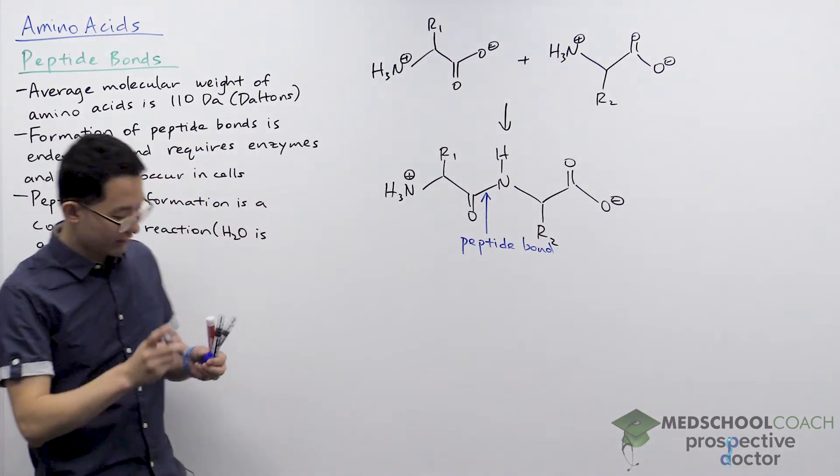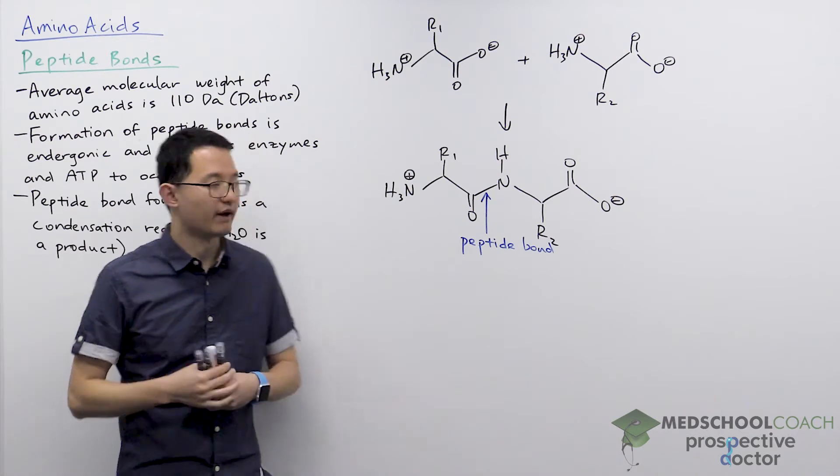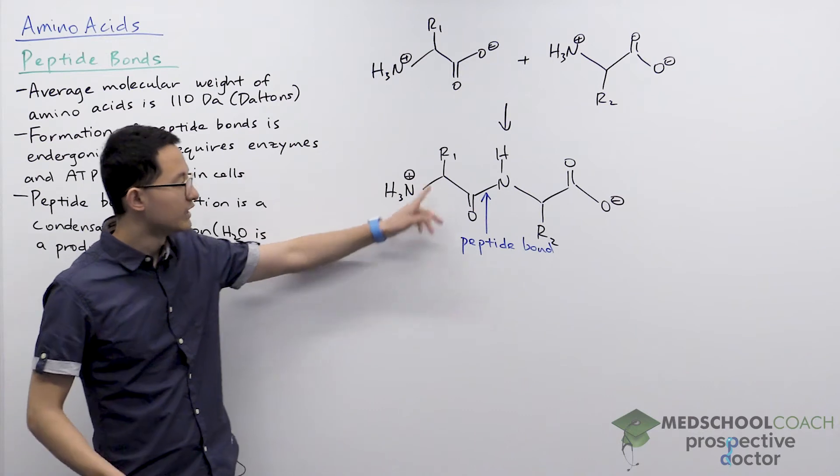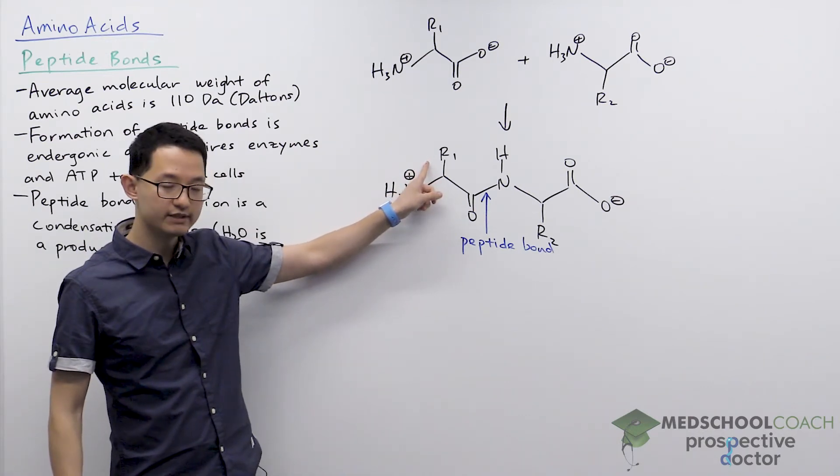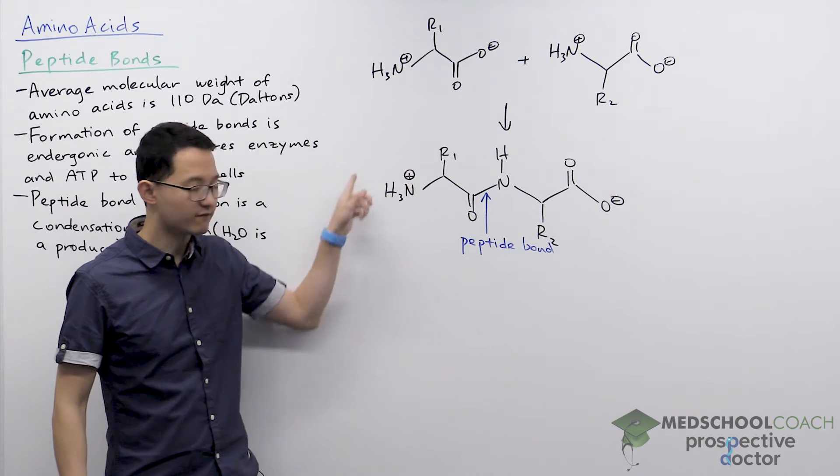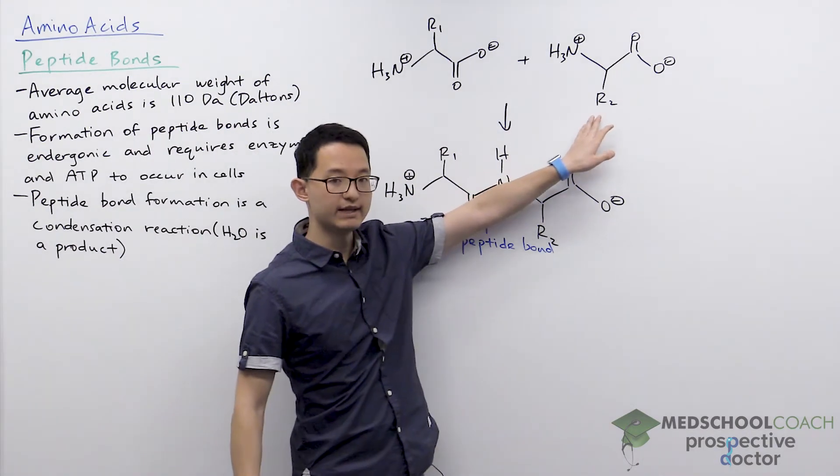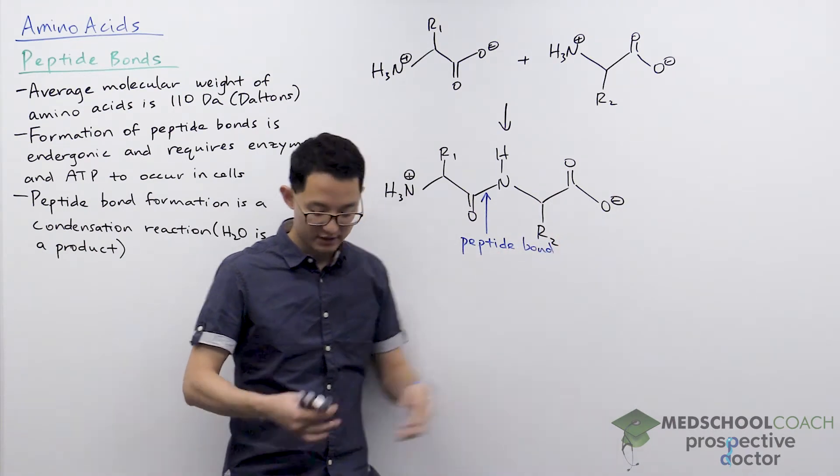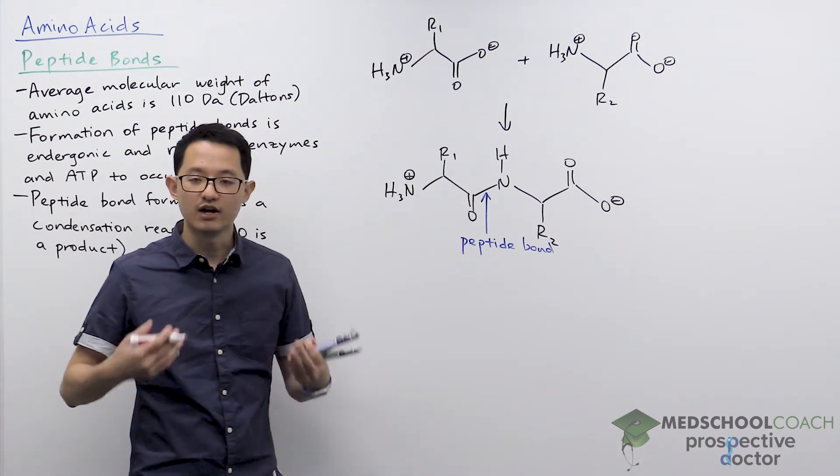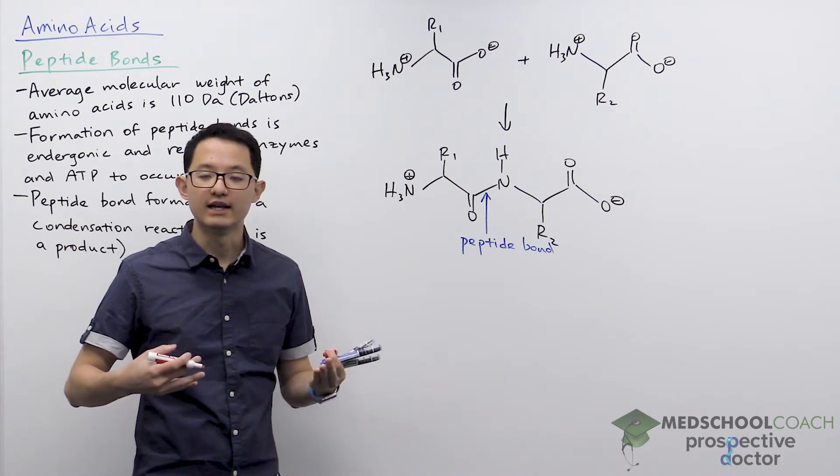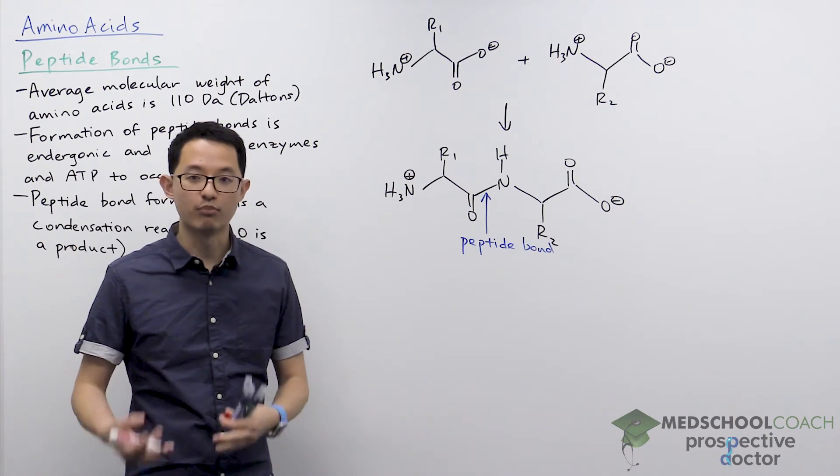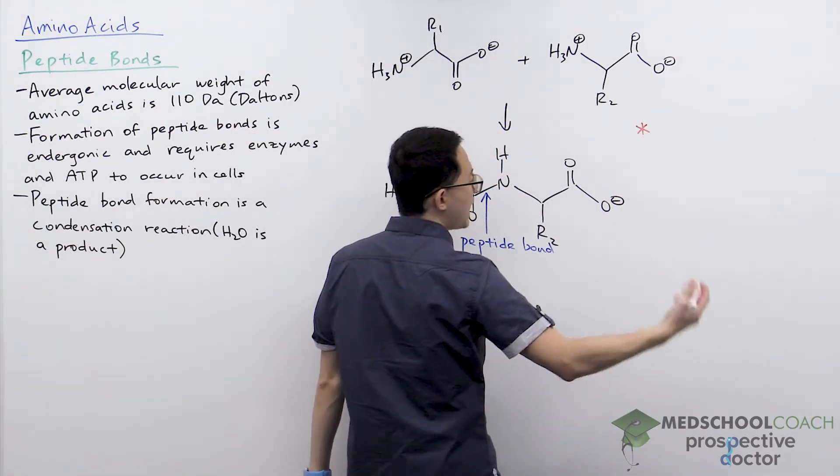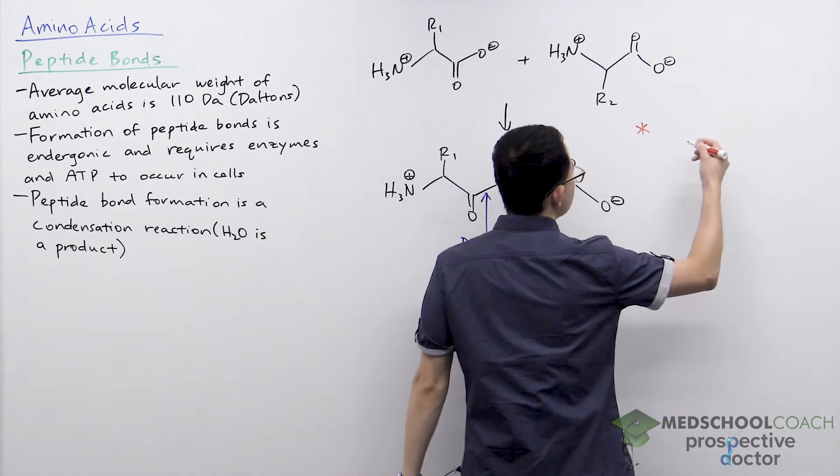Now there's a few things you should notice about how this bond was formed. When this bond was formed, you can see that the amino acid on the left R1 side chain has the free amino group. The amino acid on the right has a free carboxylic acid group. What's important about this is that when it comes to amino acids, the order of the amino acids is important.